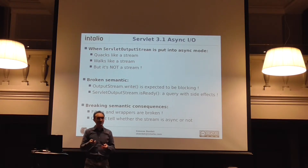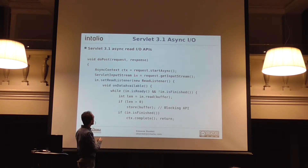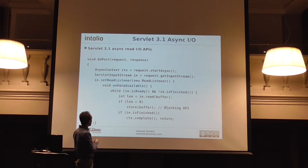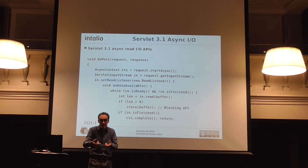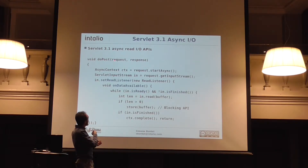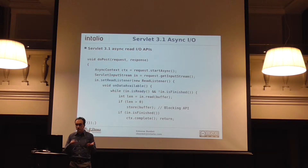We haven't even touched the read side, because we have asynchronous read as well. Asynchronous reads are very similar. You get the input stream, you have a new method setReadListener. The most important callback is onDataAvailable, called by the container when you can actually read. So if you have a slow client sending a bunch of bytes, in old Servlet 3.0 you would block until the client sends more data. Here, you read, you return, you go back, and the container knows when there is more data and calls onDataAvailable again — very similar to onWritePossible.